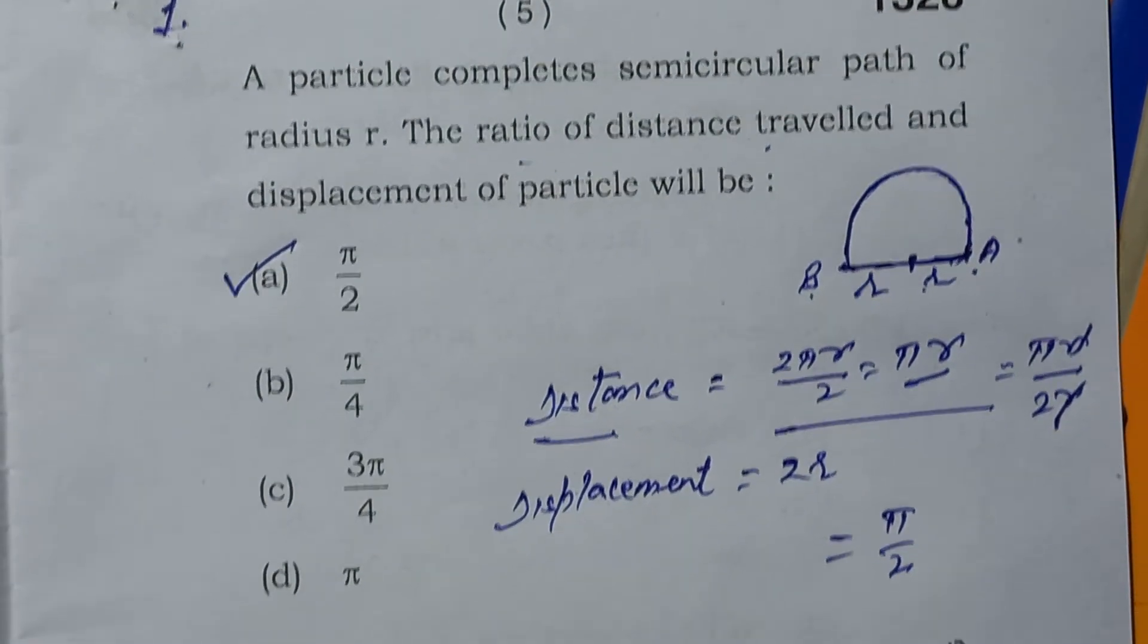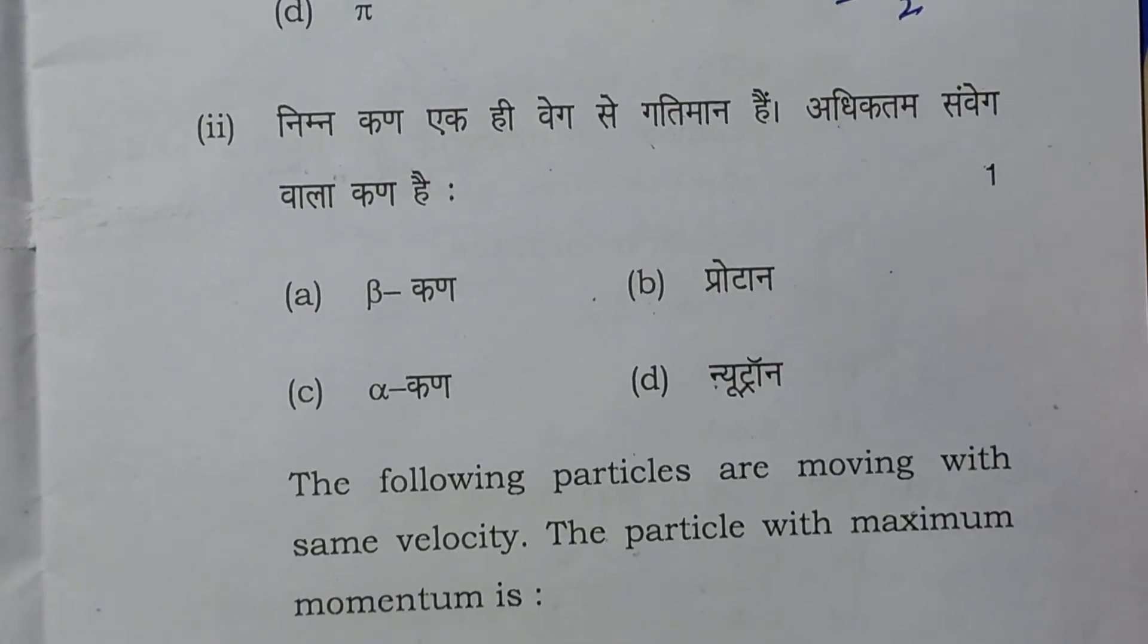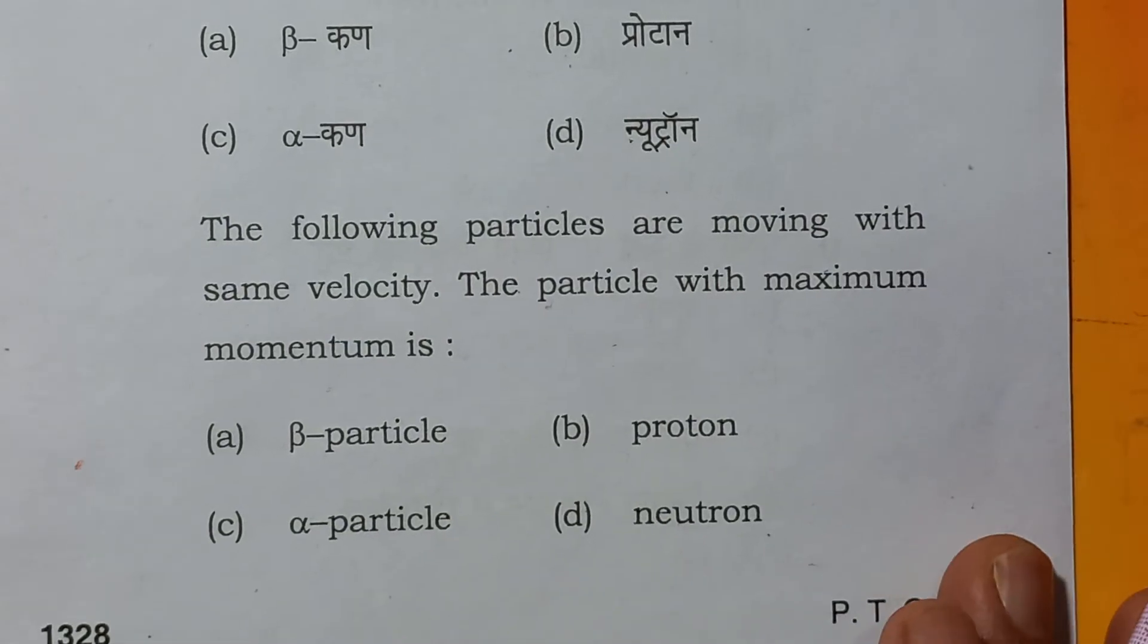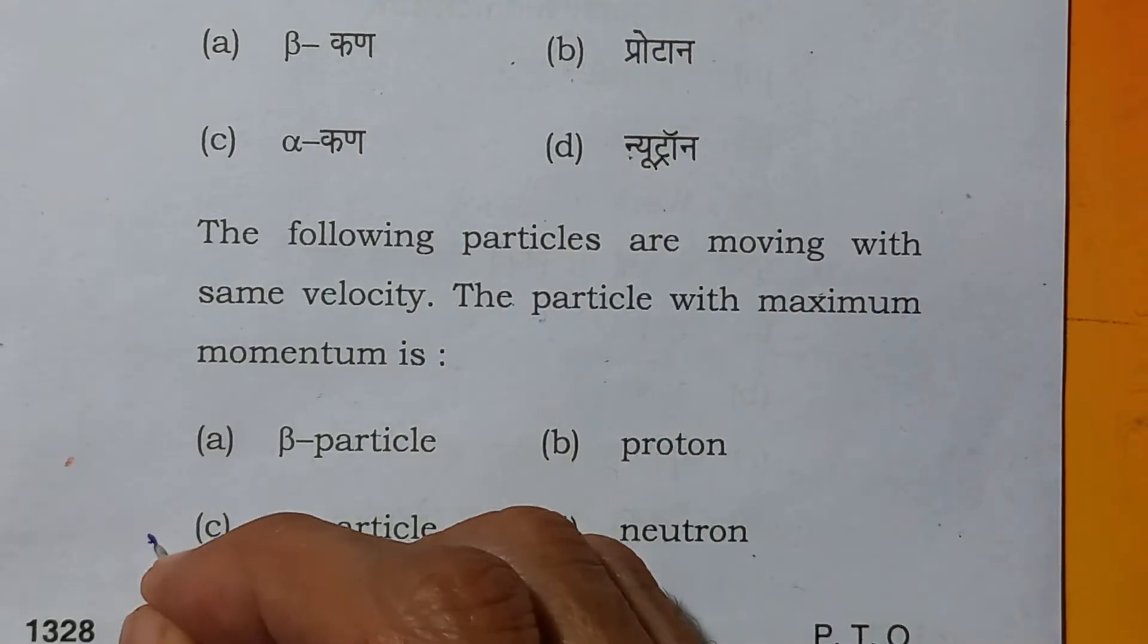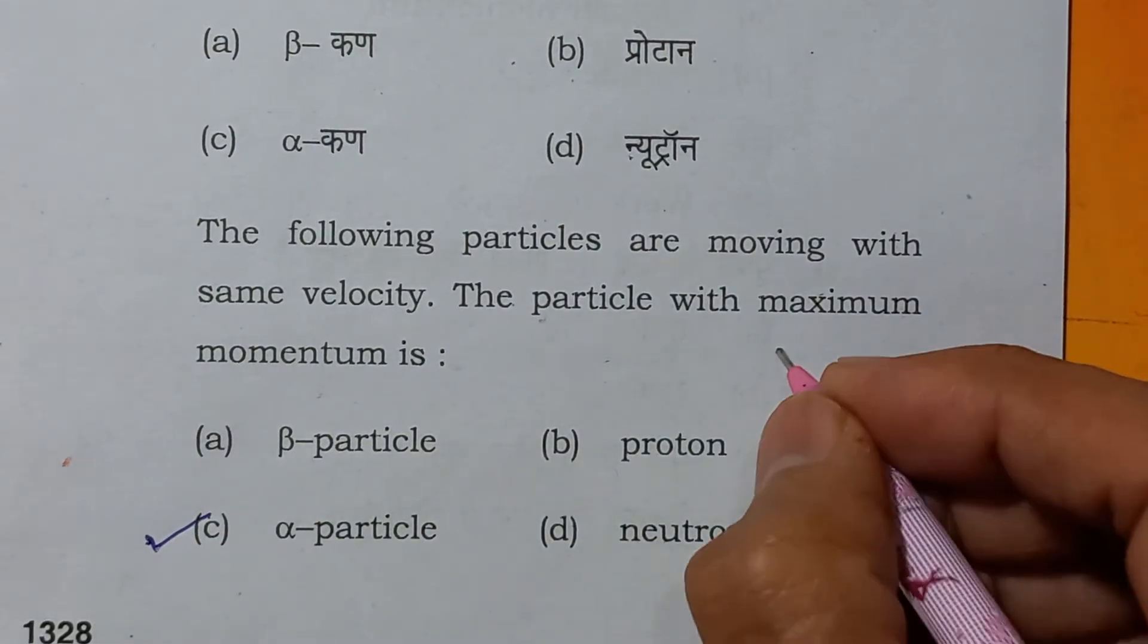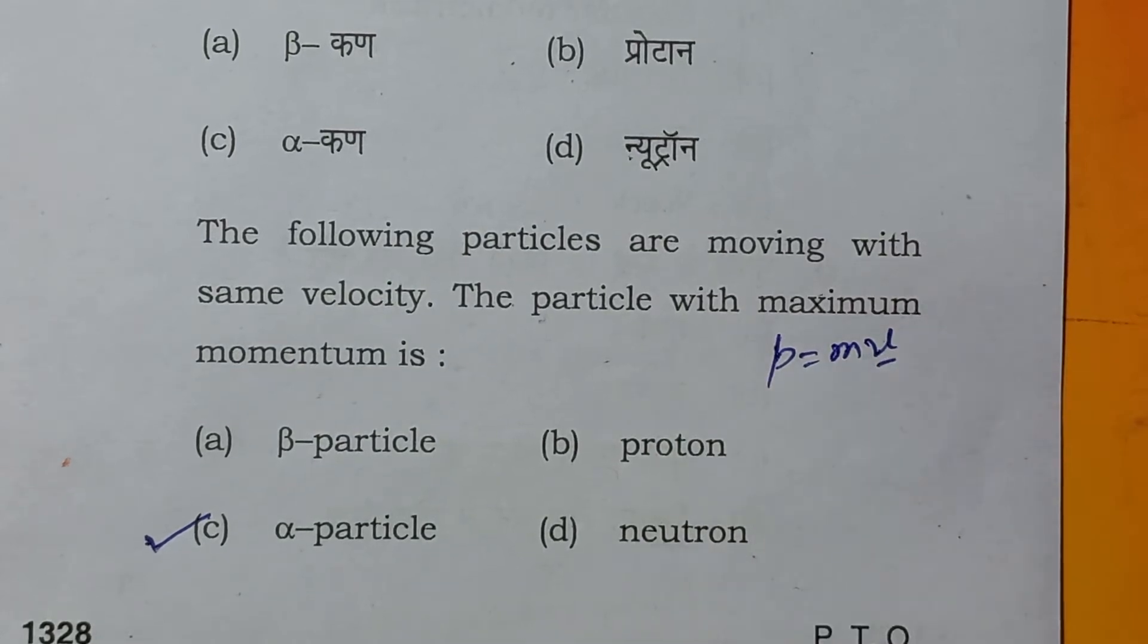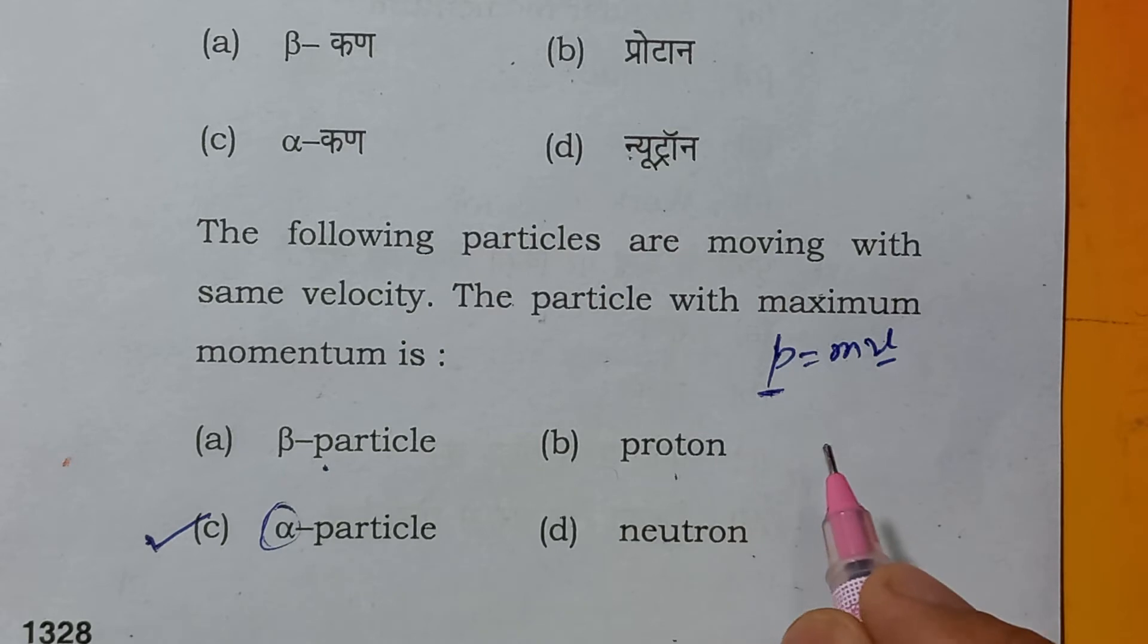Next question. The following particles are moving with same velocity. The particle with maximum momentum is the alpha particle. Because we know that momentum is mass into velocity. We know that alpha particle is heavier than beta, proton, and neutron. That means momentum will be maximum for alpha particle.